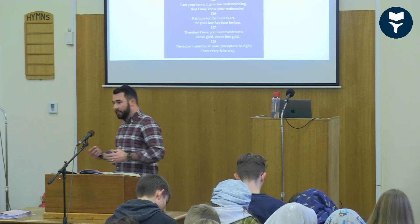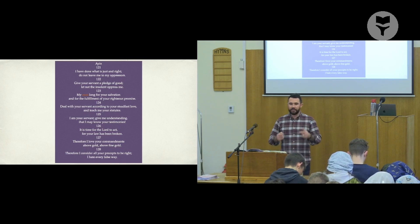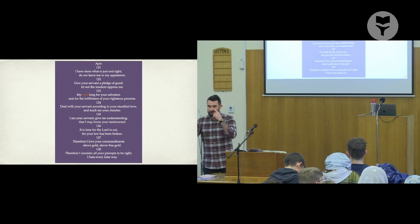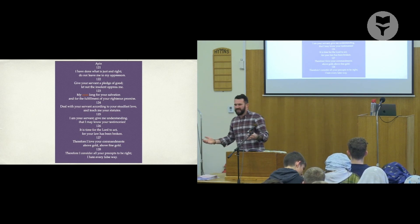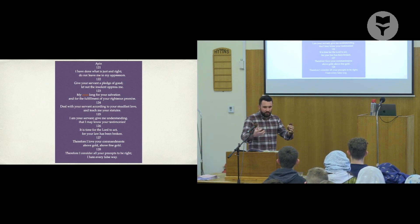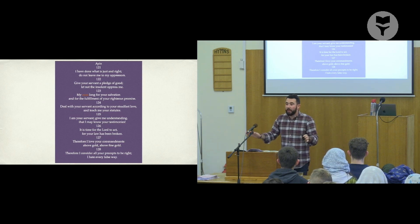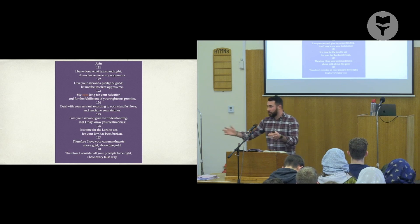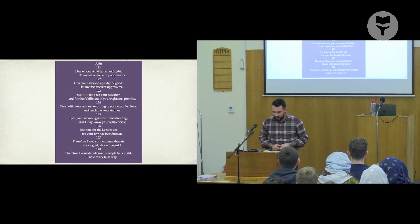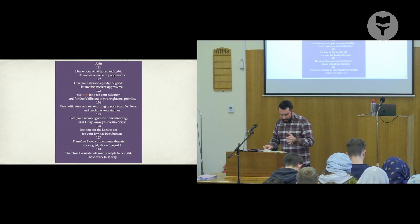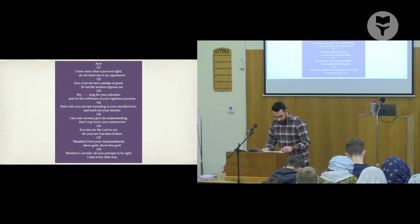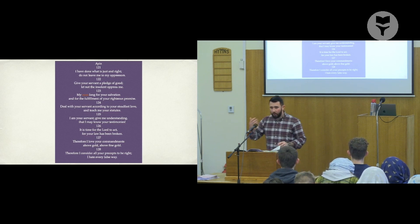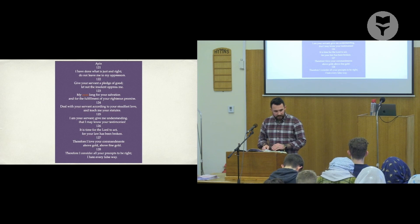The best way to understand scripture is to use other scripture to interpret it. Here we have a perfect acrostic and there's got to be a link with Lamentations. At verse 1 you had Aleph, verse 9 you had Bet, verse 25 you had Daleth — so all these letters are there. Just familiarise yourself with those before we go to verse 121.